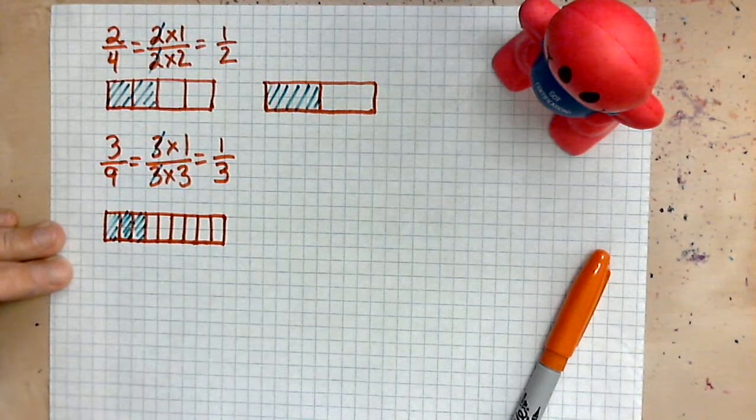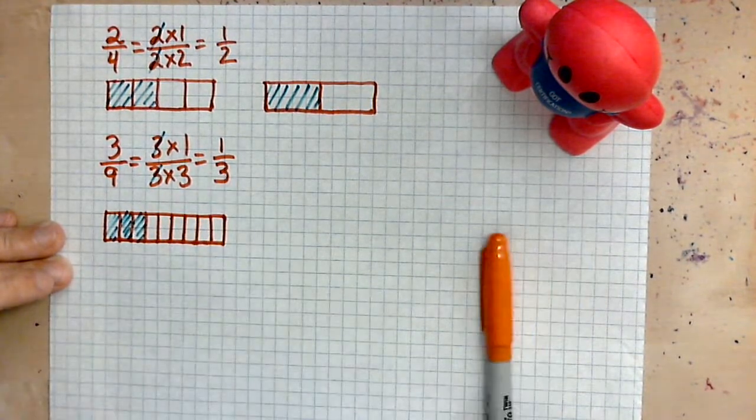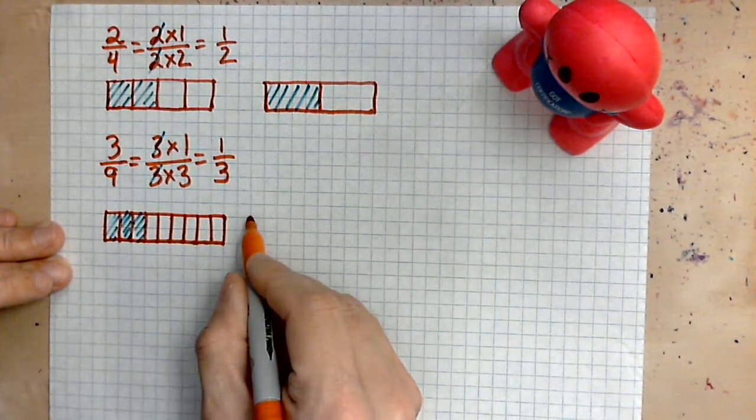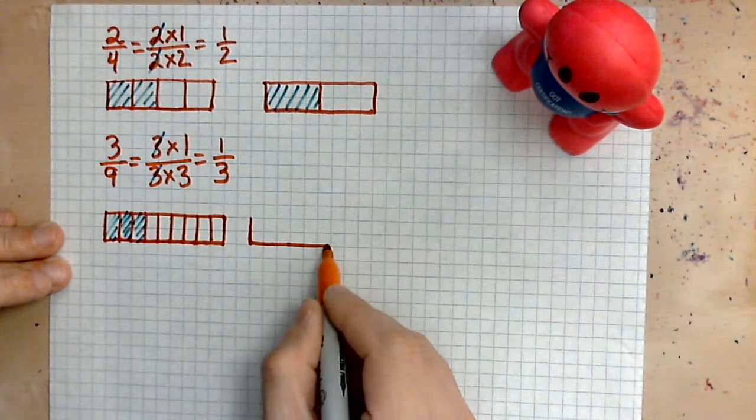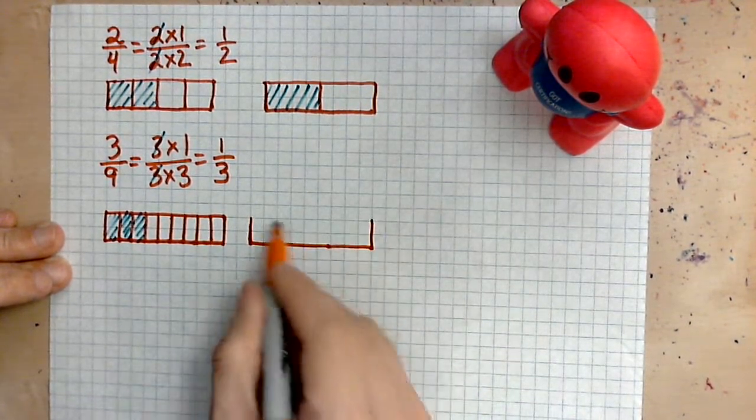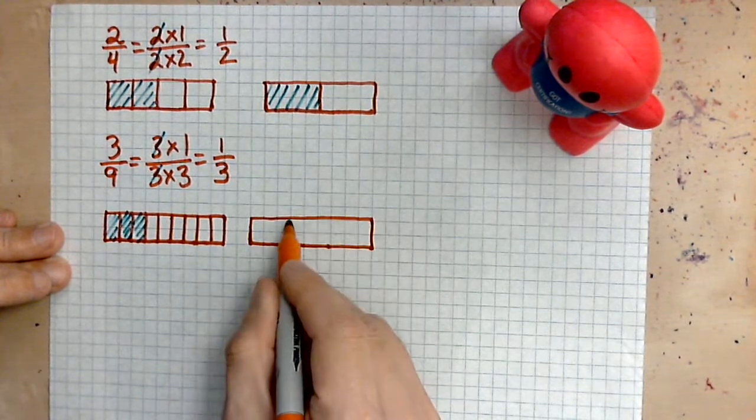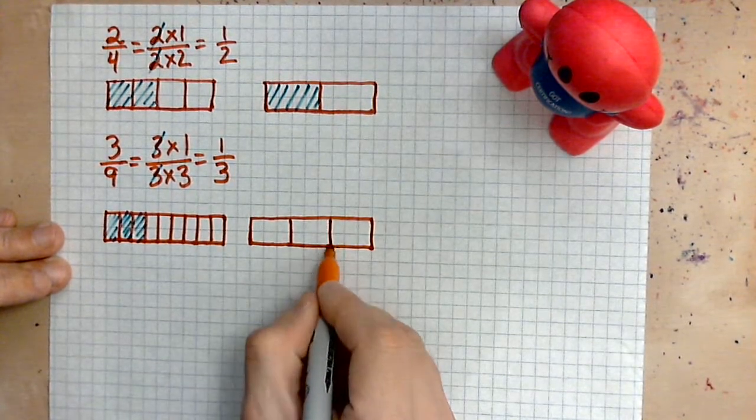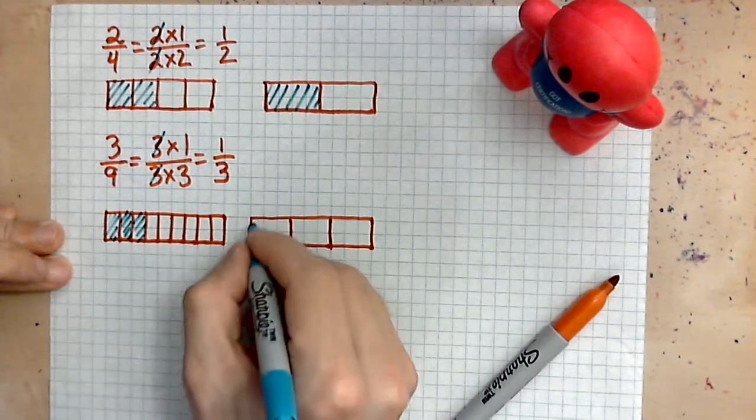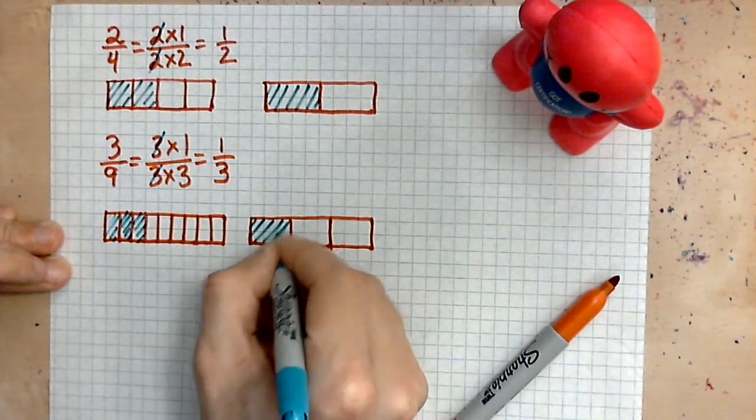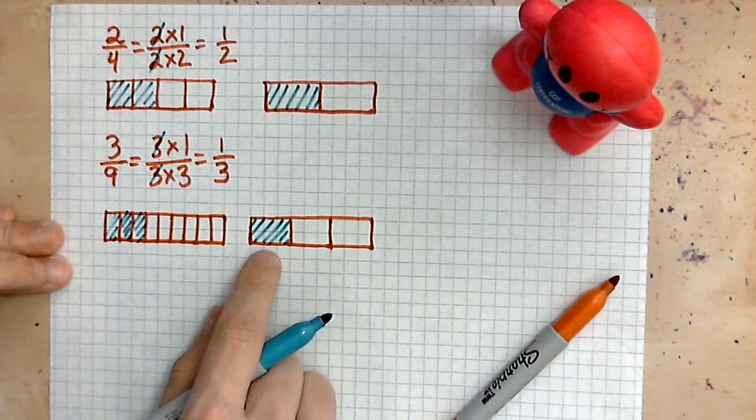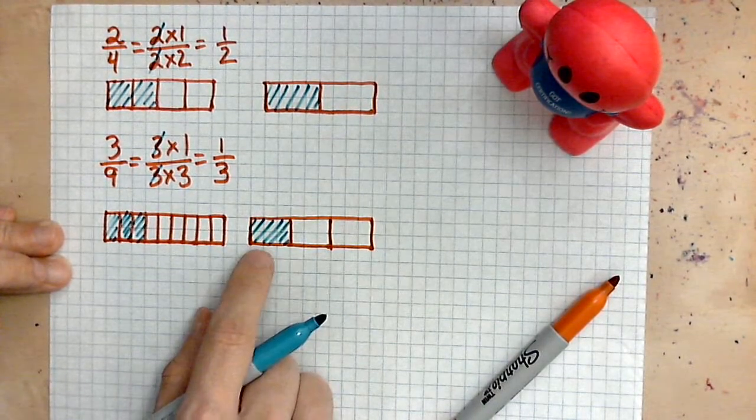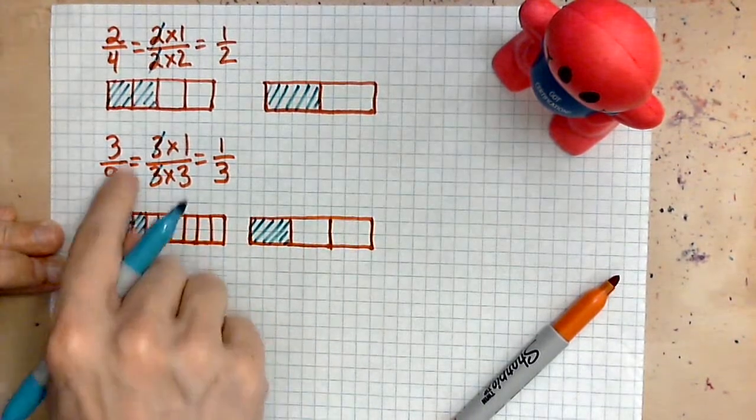That is our 3 out of 9. And by reducing what we are saying instead is, you can simply think of it as this. 1, 2, 3. Draw a rectangle of exactly the same size. But divide this one into 3 equal pieces. And one of those pieces is the same size, you see? So 1 out of 3 is the same as 3 out of 9.